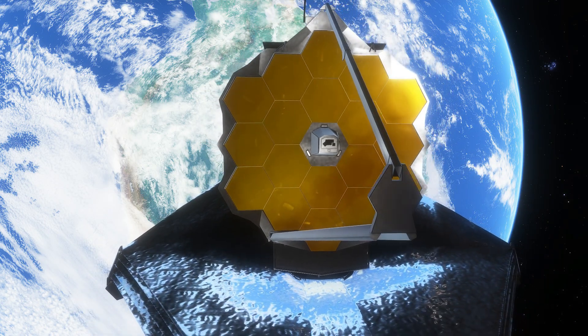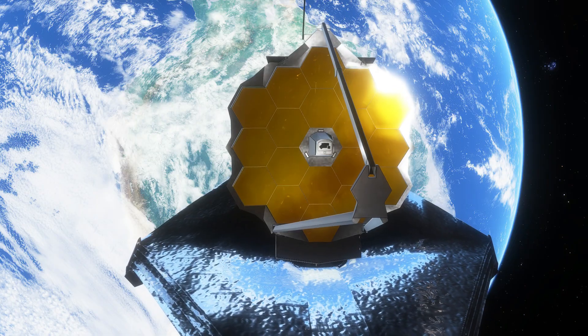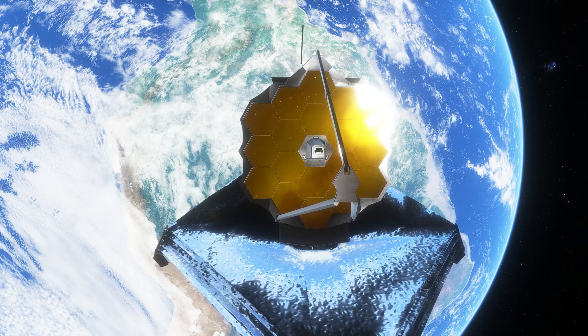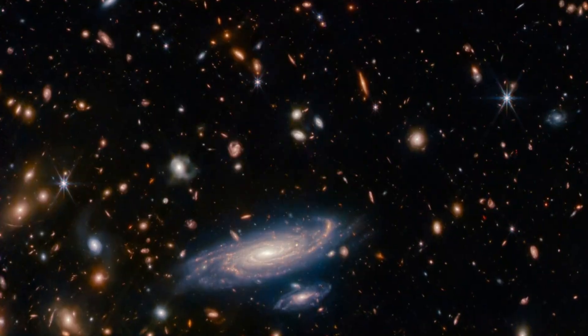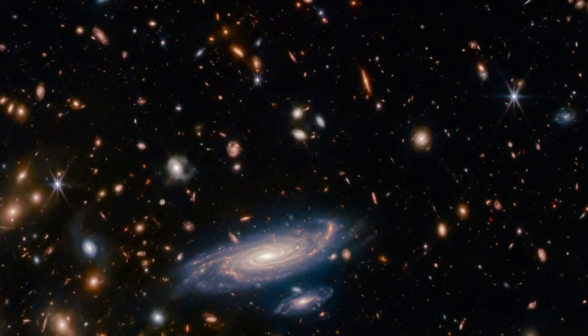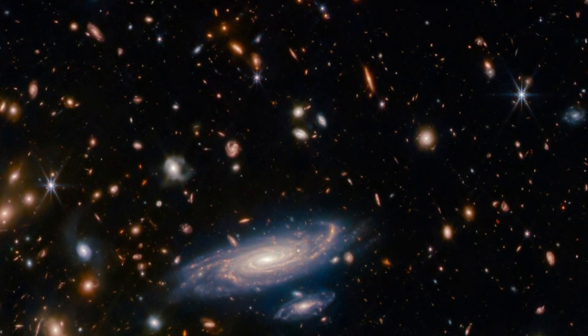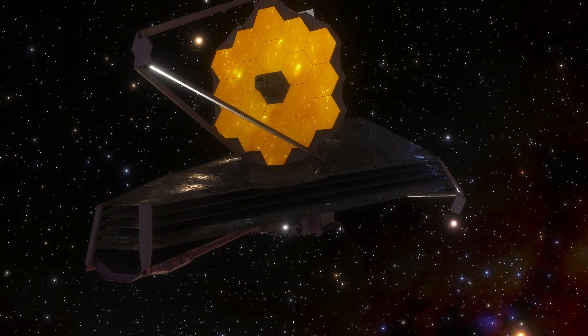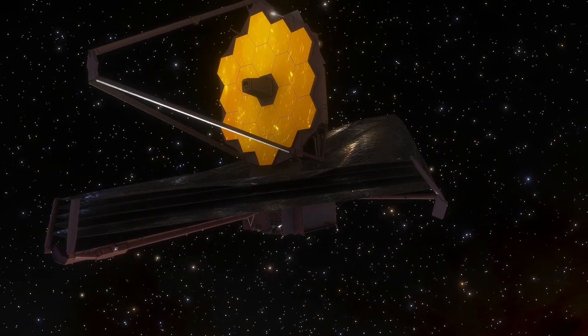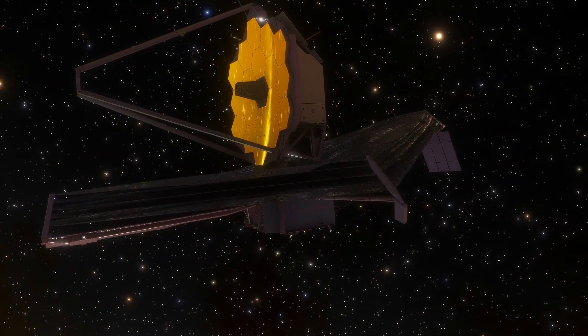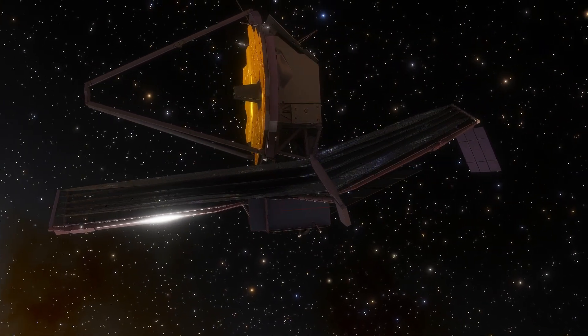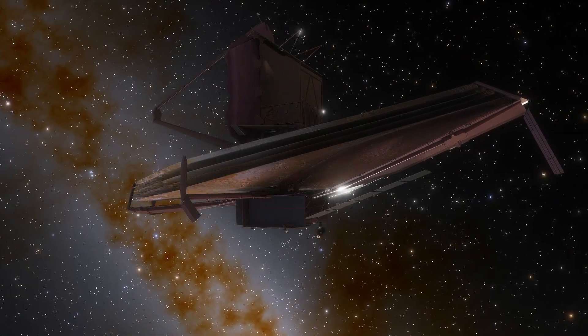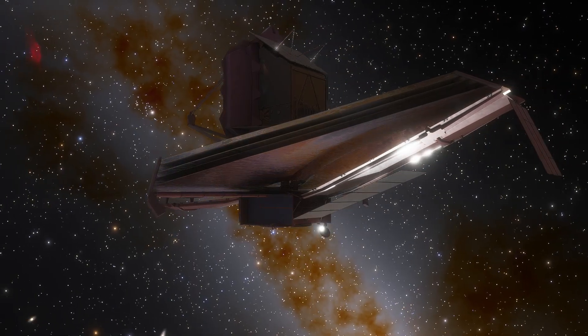According to our models, galaxies were supposed to grow slowly, merging piece by piece over billions of years. Yet here they were, ancient giants fully formed while the cosmos was still learning to walk. If these findings hold, they suggest one of two things. Either our understanding of dark matter and galaxy formation is flawed, or the early universe was far more efficient at building stars and galaxies than we ever dreamed possible.